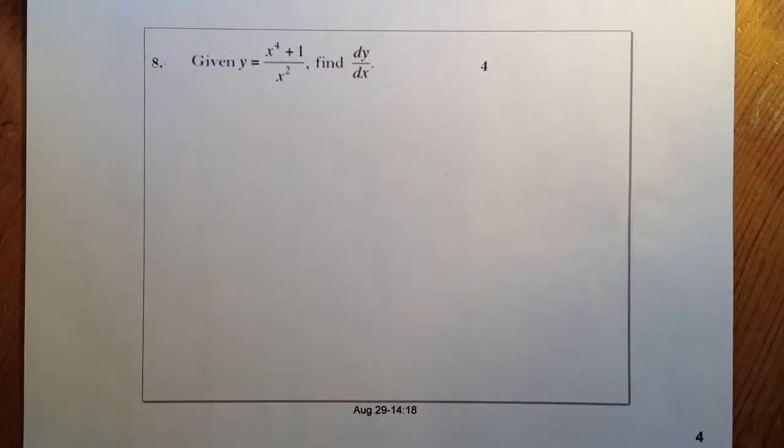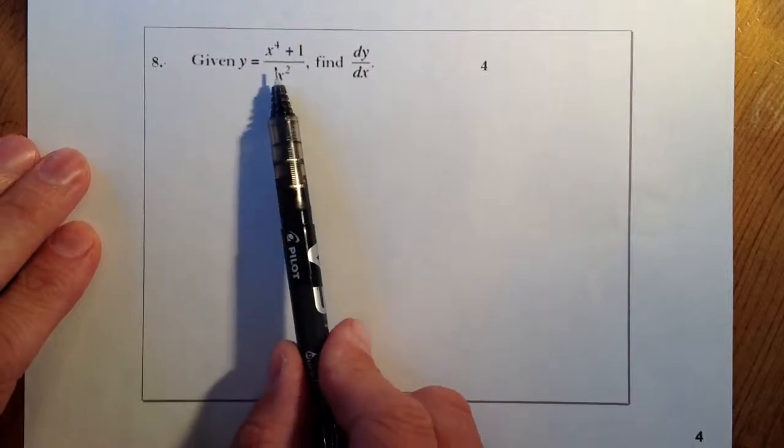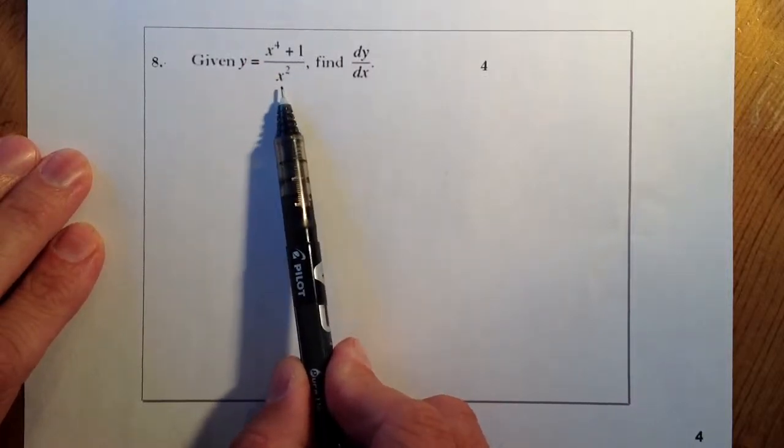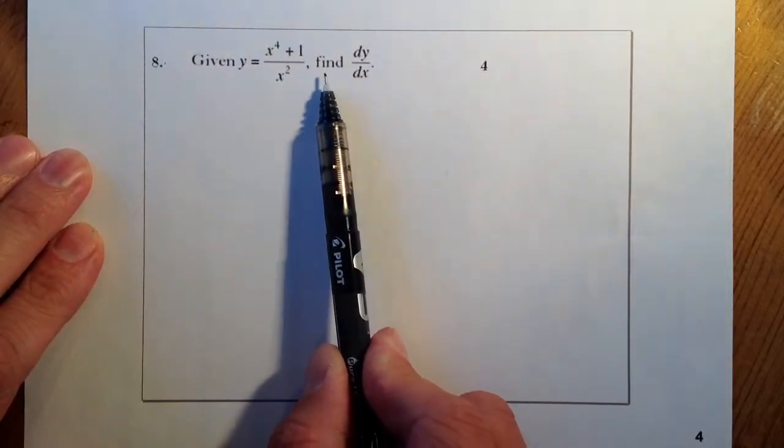This is Hyrule Homework 4, question 8. Given y equals 4x plus 1 all over x squared, find dy by dx.